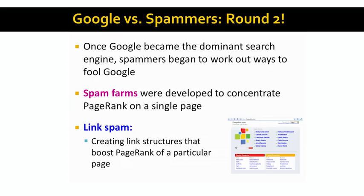So Google versus spammers, round two. Once Google became a dominant search engine, spammers began trying to figure out ways how to trick Google search results. And what they did is they created what is called spam farms, where basically the idea is that we want to concentrate and collect the page rank and kind of funnel it towards a single target page. And there are many kinds of web spam and many kinds of link spam.